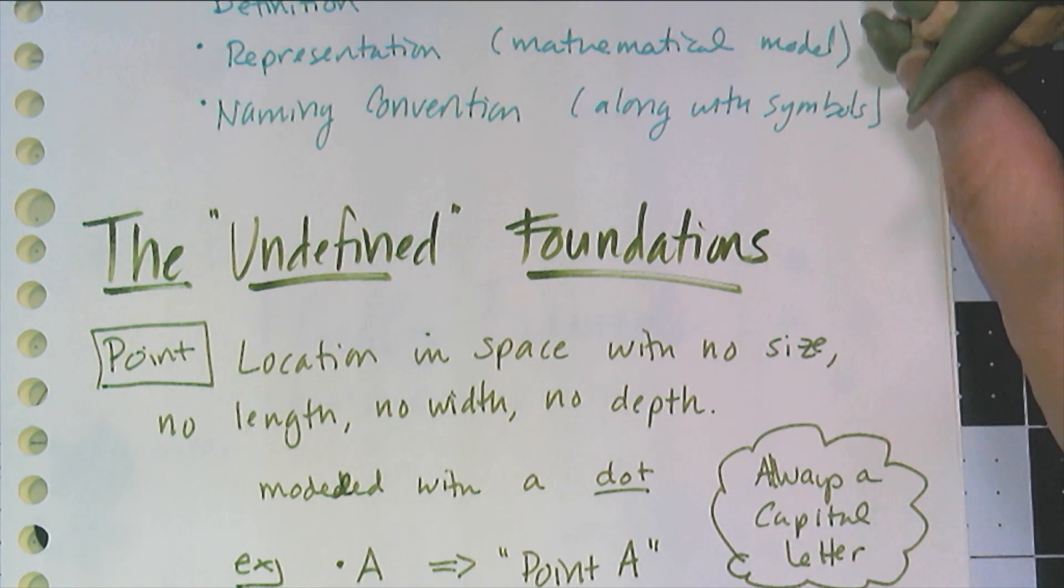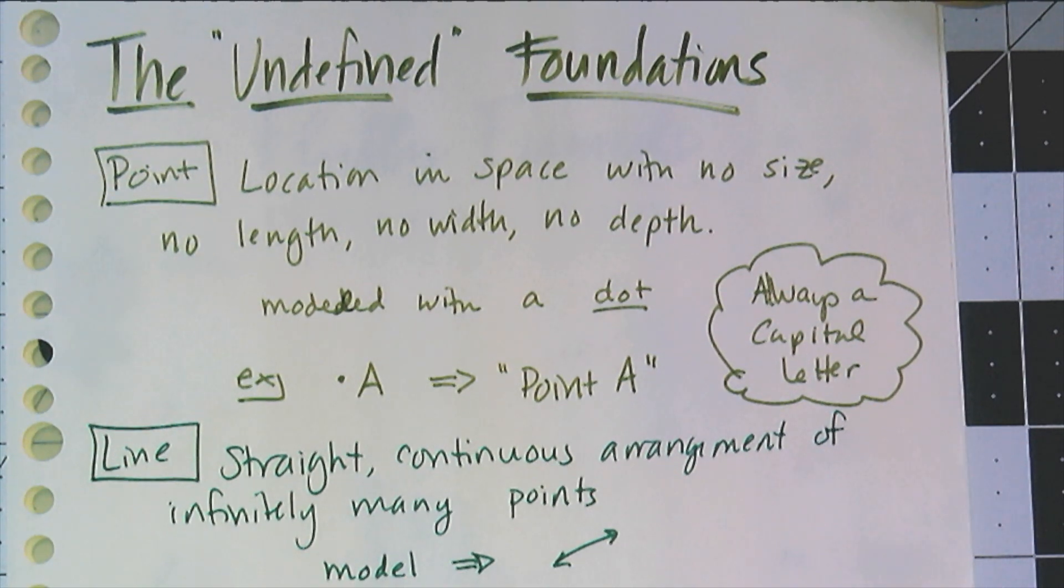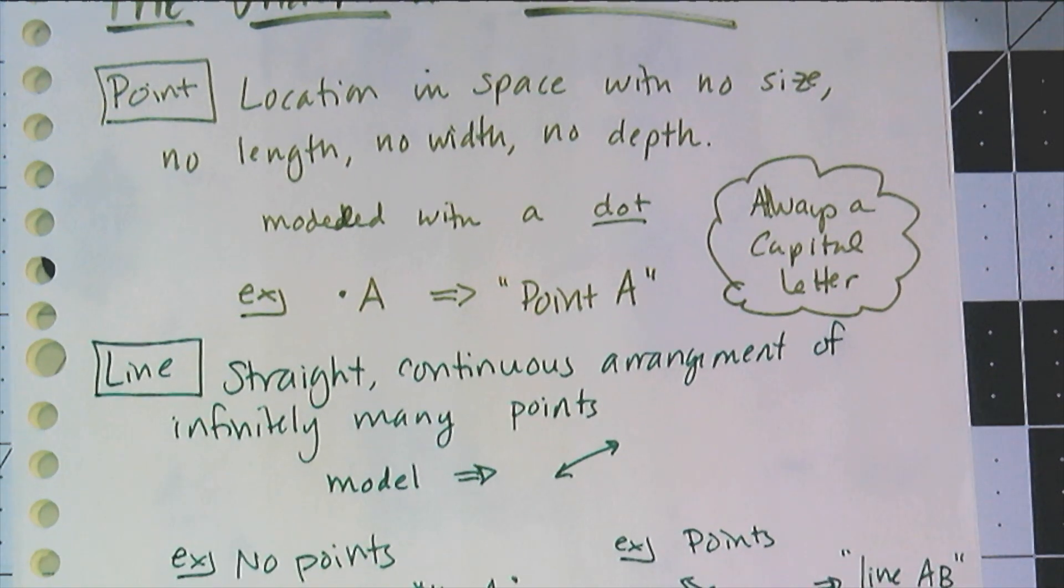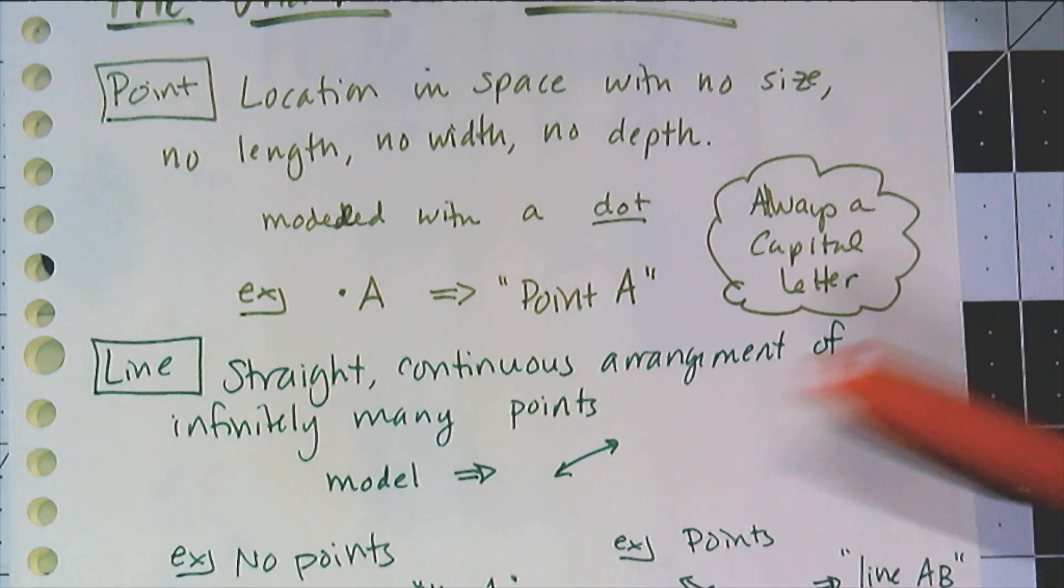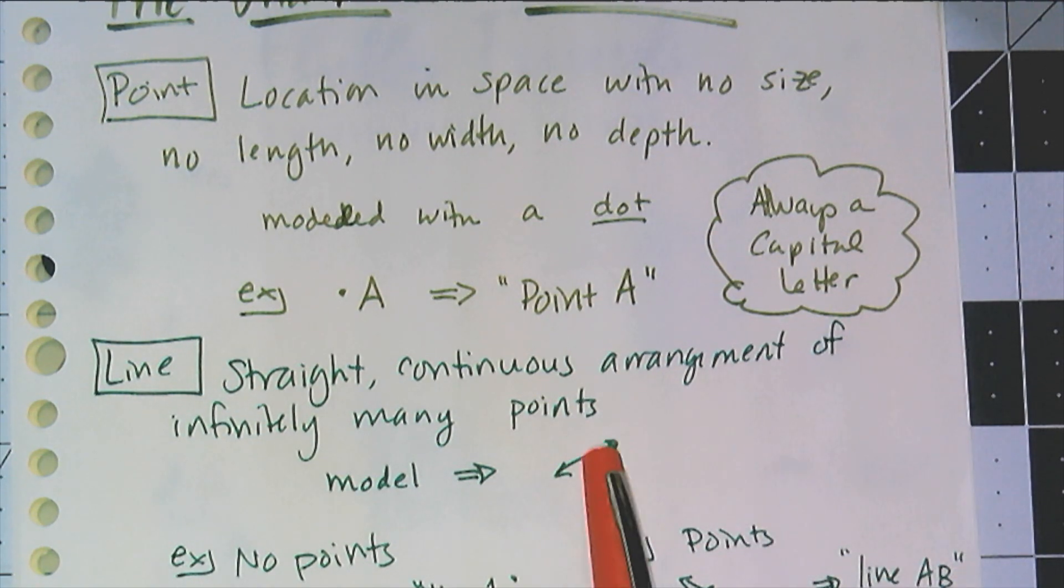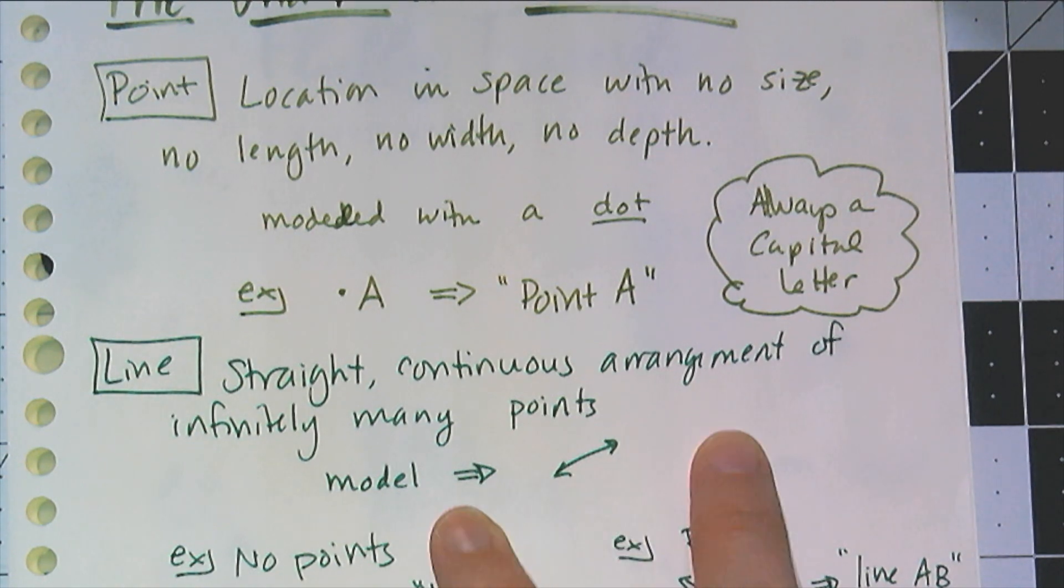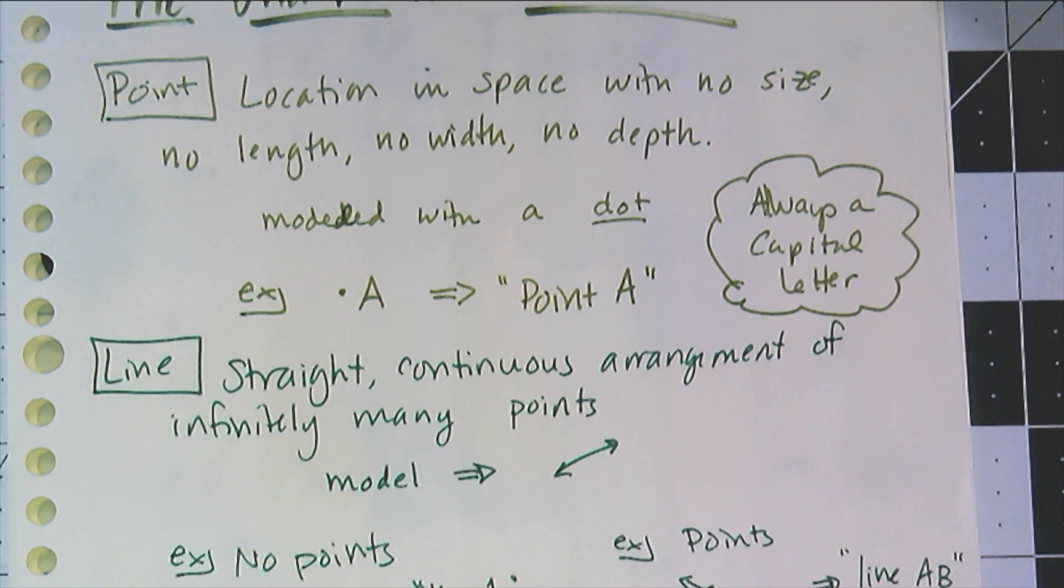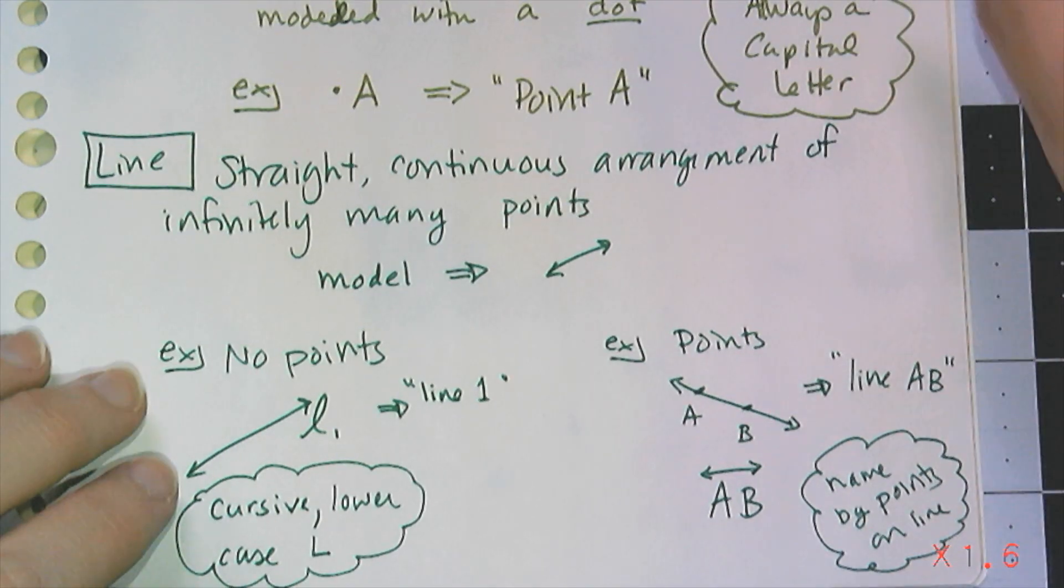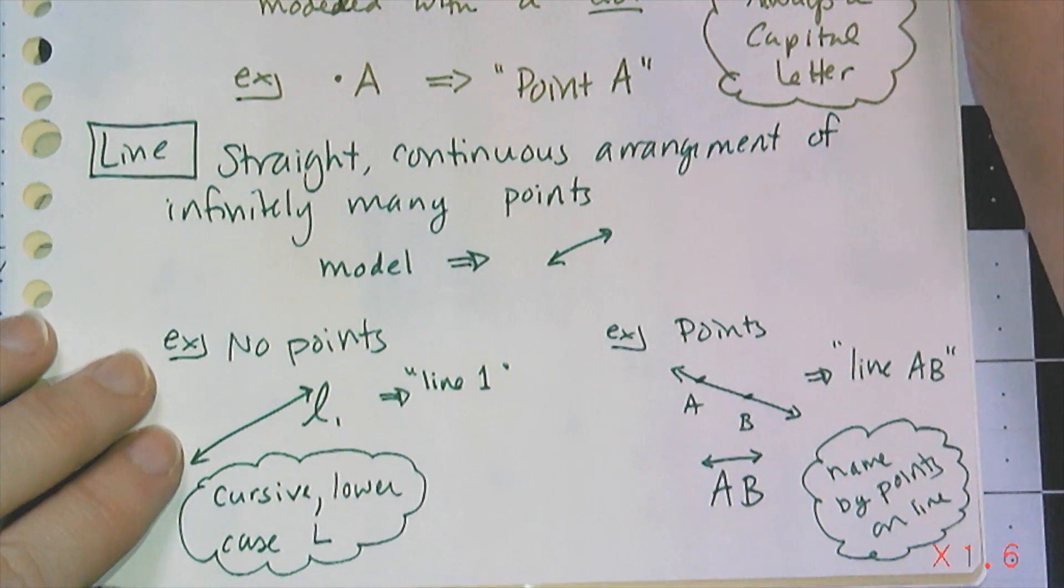The second term is line. It is defined as a straight continuous arrangement of infinitely many points. The model looks like a line segment with two arrows indicating that it goes in both directions forever. There are two ways of naming lines depending on if the line contains named points or not.